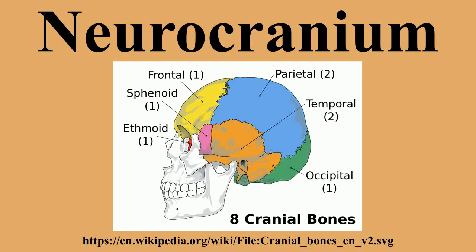Evolutionarily, the human neurocranium has expanded from comprising the back part of the mammalian skull to being also the upper part. During the evolutionary expansion of the brain, the neurocranium has overgrown the splanchnocranium. The upper frontmost part of the cranium also houses the evolutionarily newest part of the human brain, the frontal lobes.